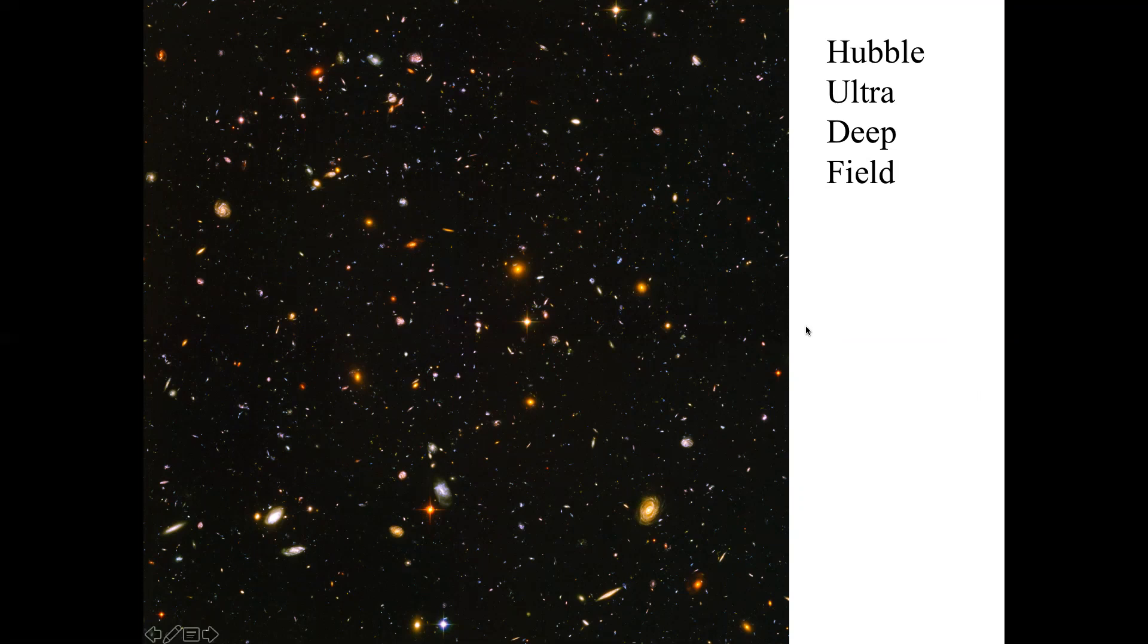In astronomy, if we want to know what galaxies were like 5 billion years ago, we just need to find a galaxy that's 5 billion light years away. And in this one image, we have many galaxies that are that far away and farther. You can just look at them.